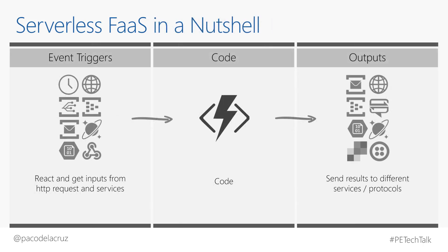In a nutshell, all serverless function-as-a-service offerings have this structure: there is a trigger — which can be a message in a queue, an HTTP request, a file in a storage container, or a webhook — depending on the cloud provider. That event triggers your code, written in various languages, and then your code outputs a result to another queue, a file in storage, or something similar. The triggers and outputs vary by cloud provider, with your code in the middle.